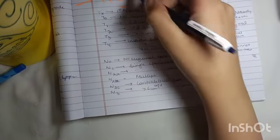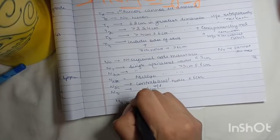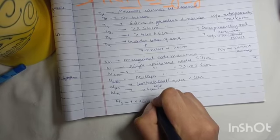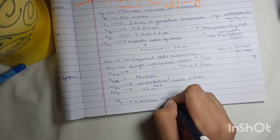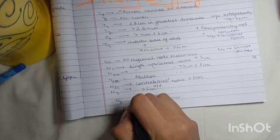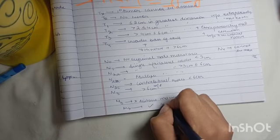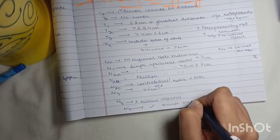Now coming on to M. If it is M0, that means no distant metastasis, and if it is MX, it means that the metastasis cannot be assessed.